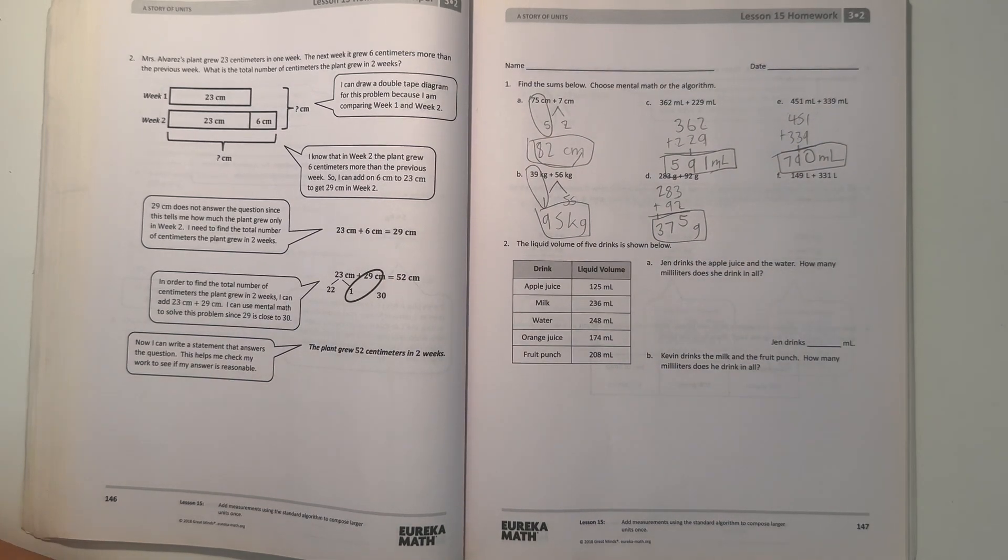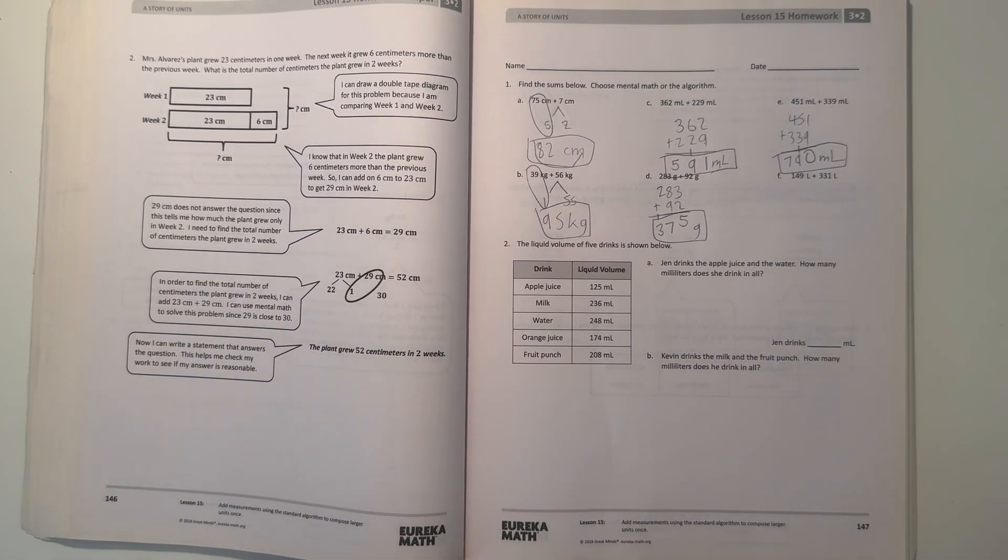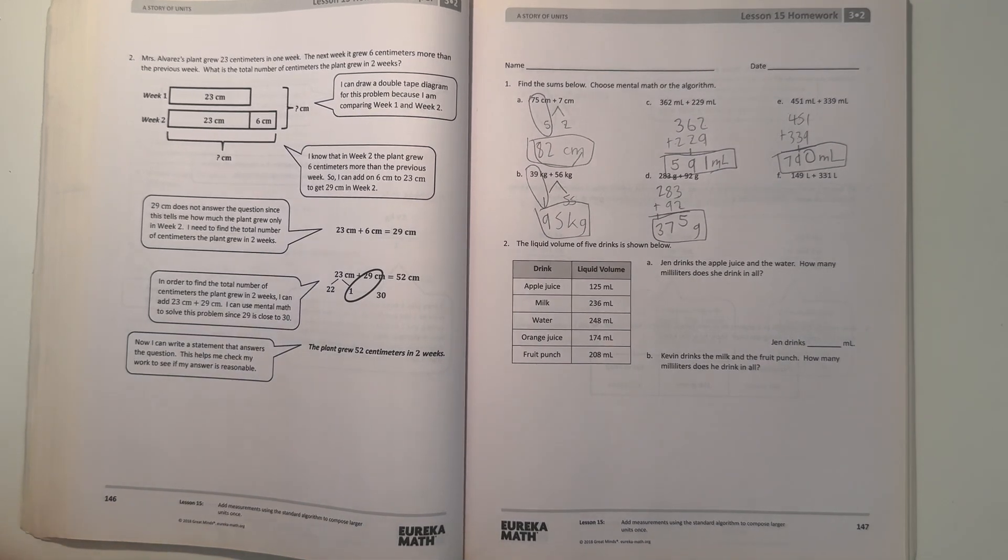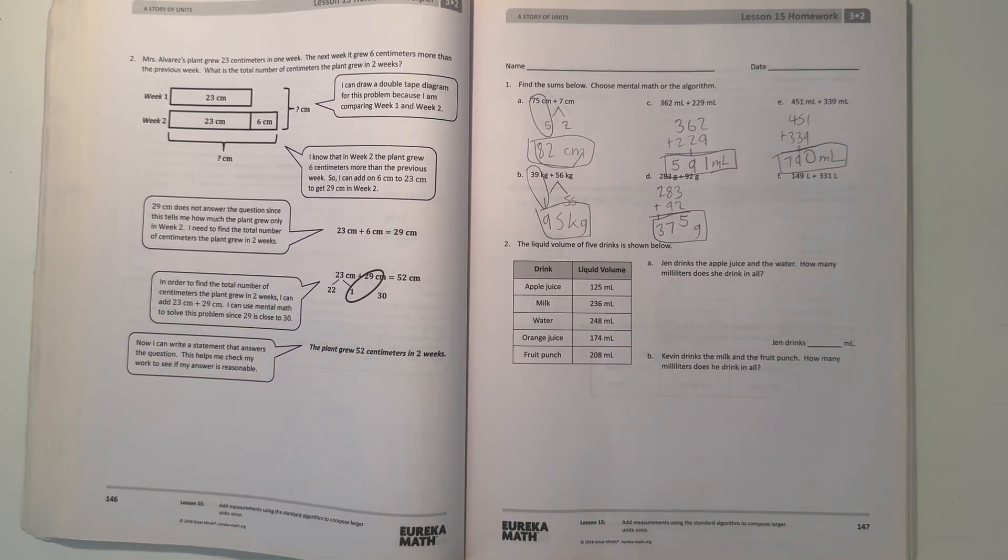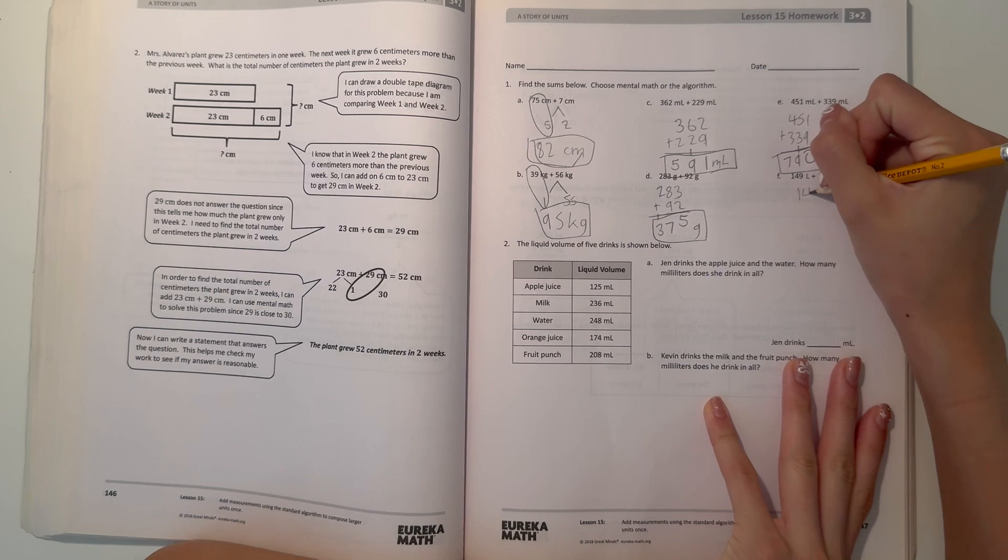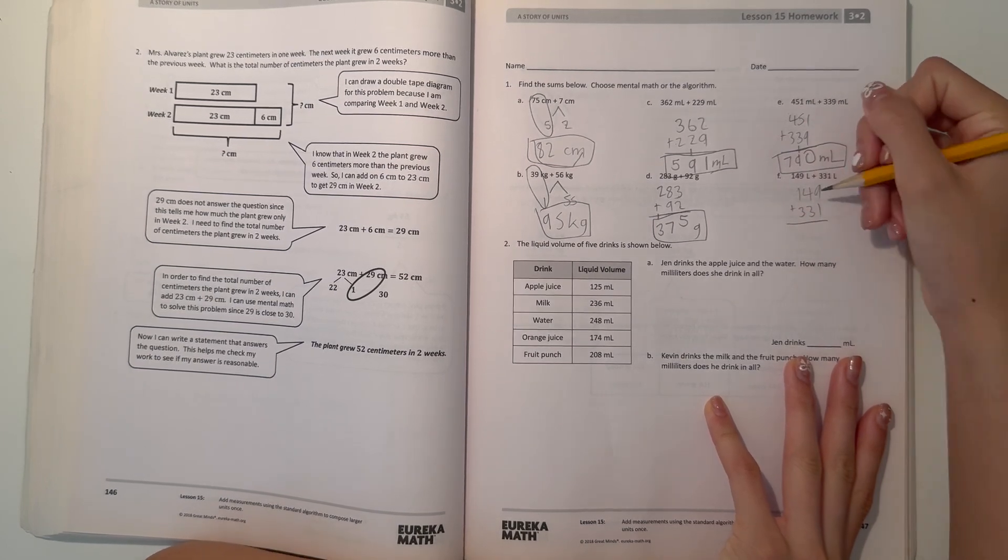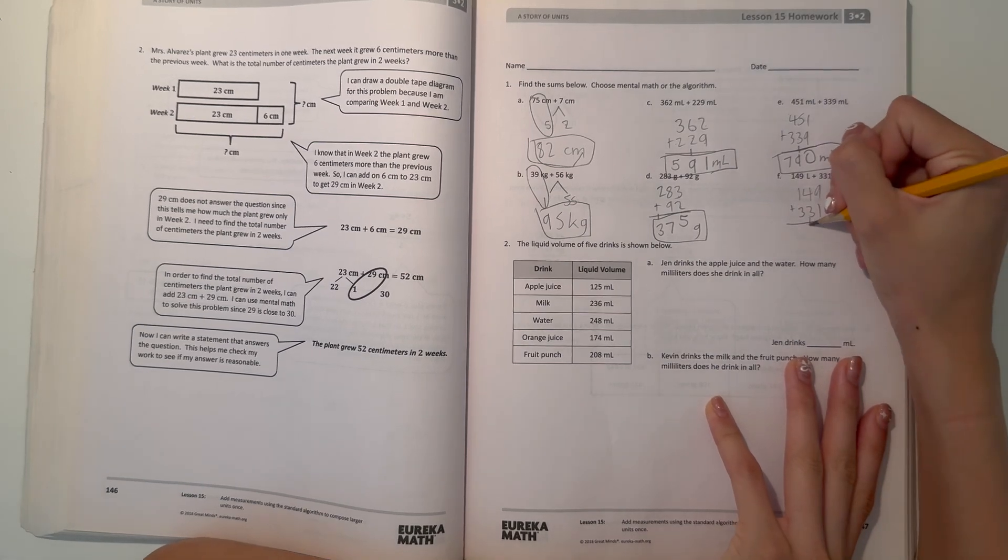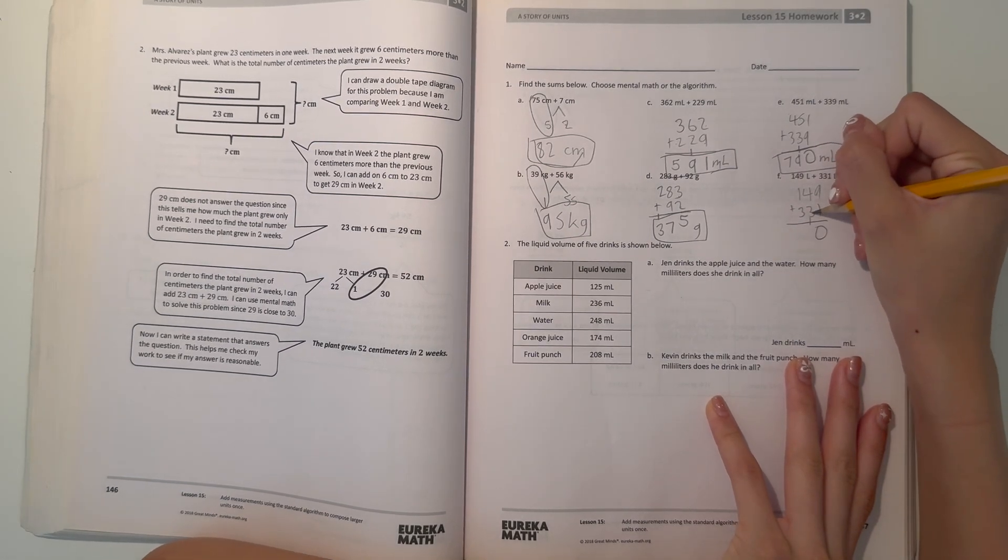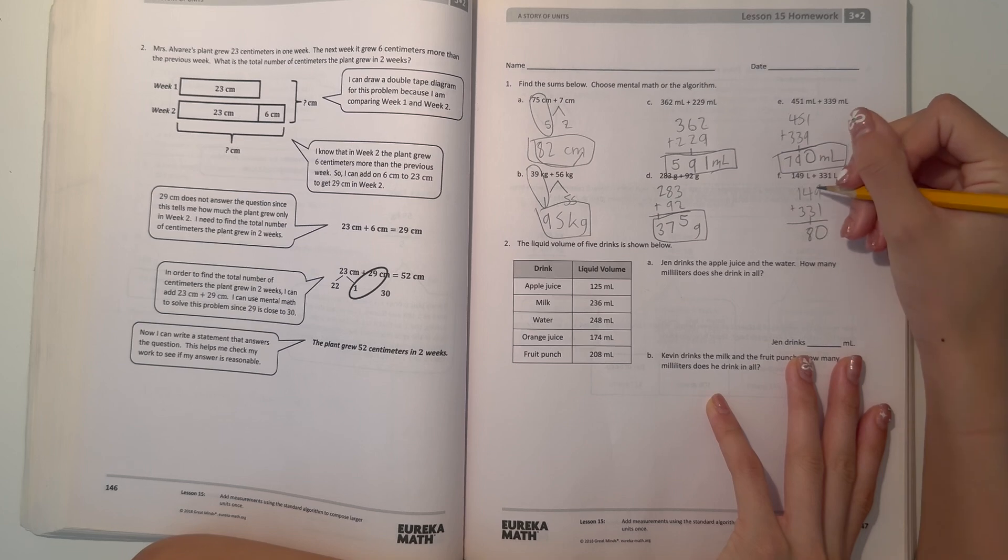Part F, we have 149 plus 331. 9 plus 1 is 10, so we carry the 1. 4 plus 3 is 7, plus 1 is 8, and 1 plus 3 is 4.